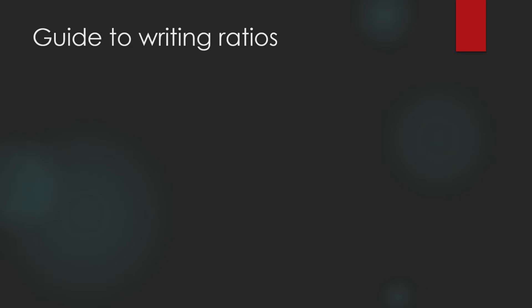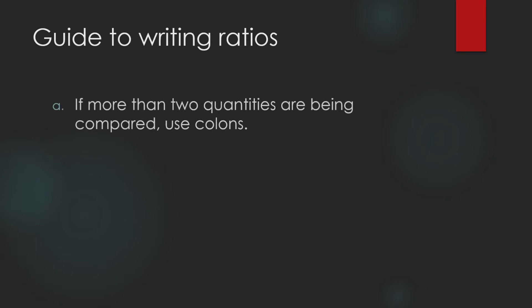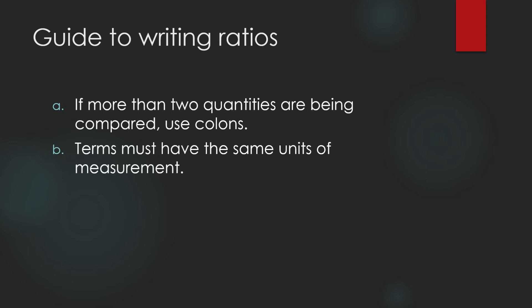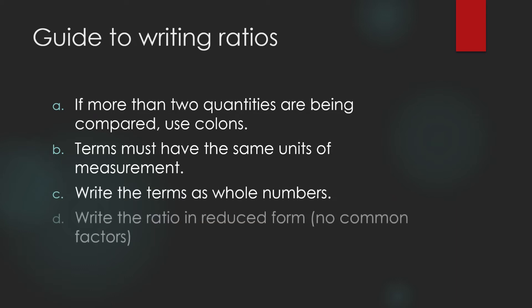Guide to writing ratios: If more than two quantities are being compared, use colons. Terms must have the same units of measurement. Write the terms as whole numbers. And the ratio must be in reduced form, meaning the terms must have no common factors.